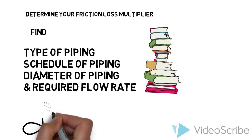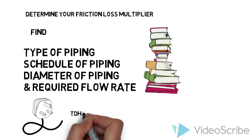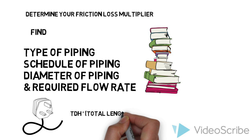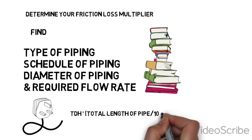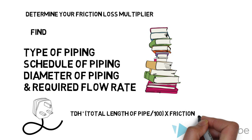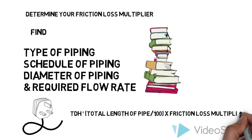Finally, plug all your variables into the following formula and you'll have your answer. Total length of pipe with fittings divided by 100 times friction loss multiplier equals your total dynamic head.